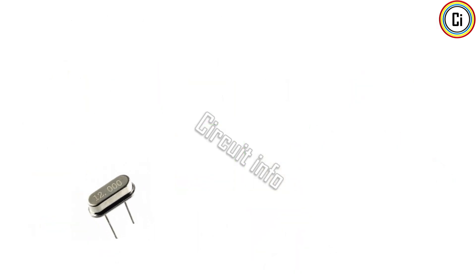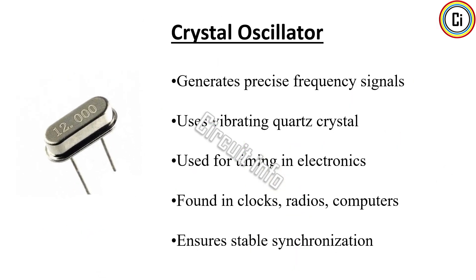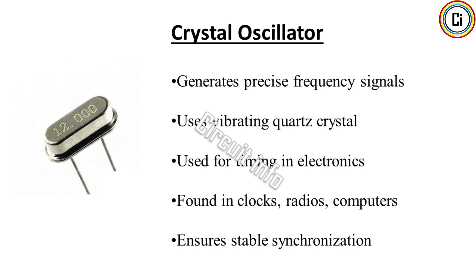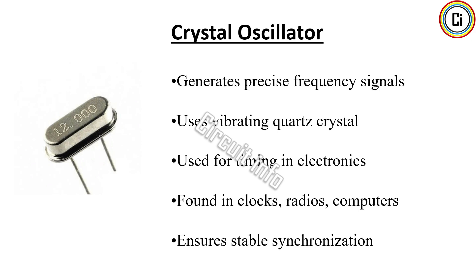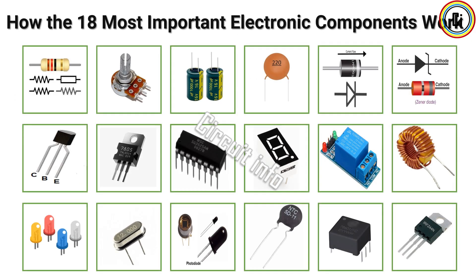A crystal oscillator generates a precise and stable frequency signal by using the mechanical resonance of a vibrating quartz crystal. These frequencies serve as clock signals for timing purposes in processors, radios, clocks, and communication devices. Crystal oscillators provide higher accuracy and stability compared to other oscillators, ensuring devices operate synchronously. They are essential in digital electronics, enabling accurate data transmission, timekeeping, and signal processing. The frequency depends on the crystal size and cut, and small variations can affect overall system performance.